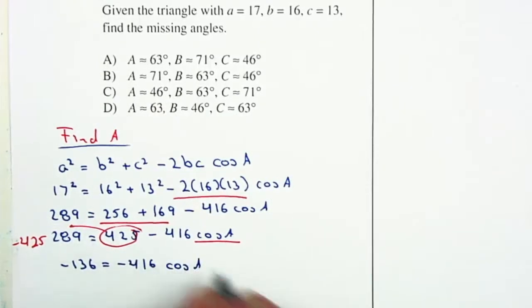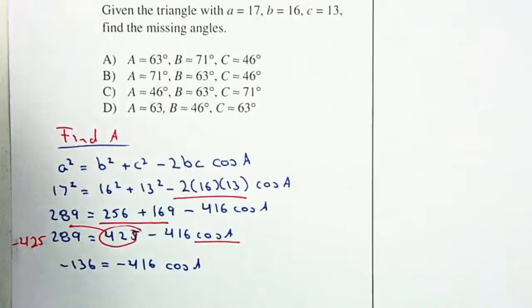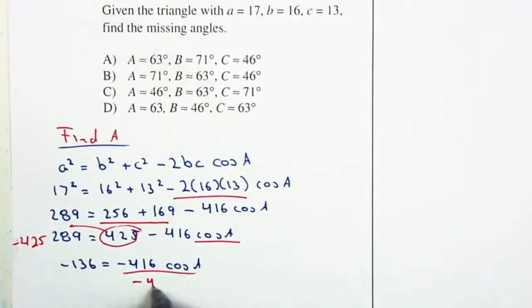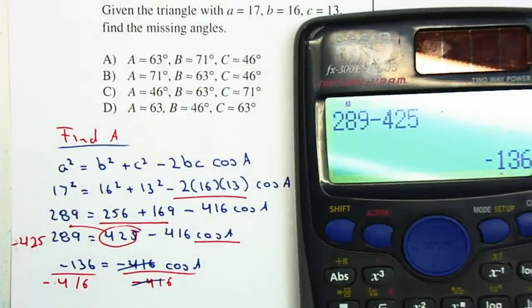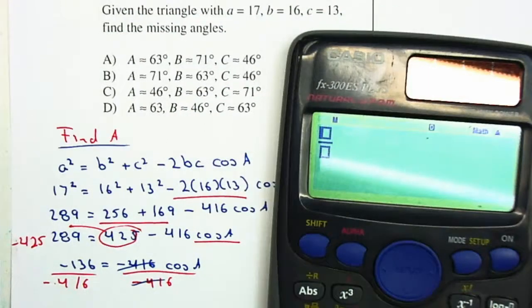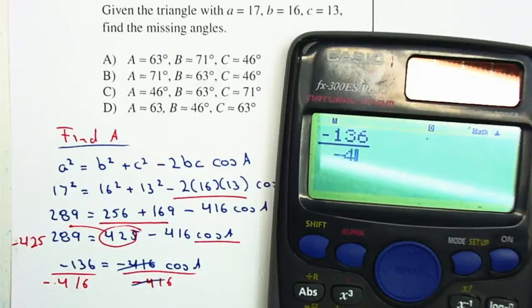I'm going to divide by -416, divided by -416. That will cancel. Therefore I have cosine of A = -136 / -416.